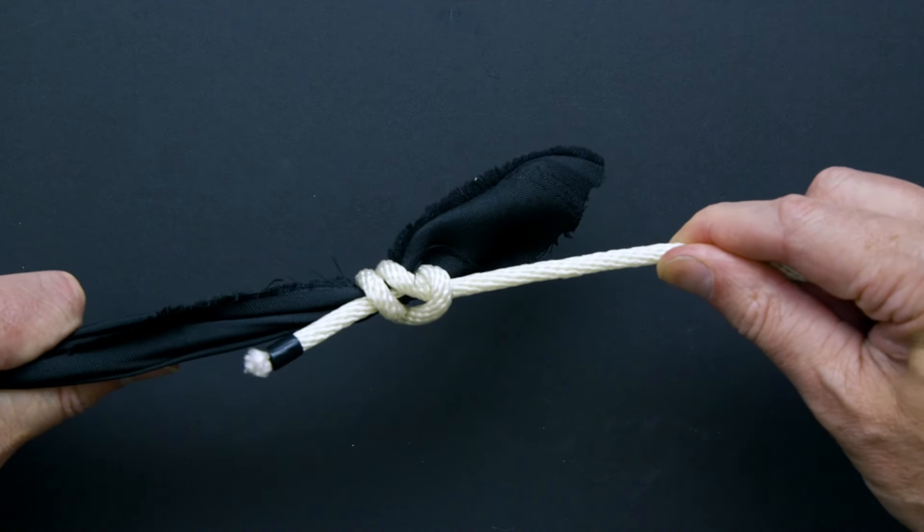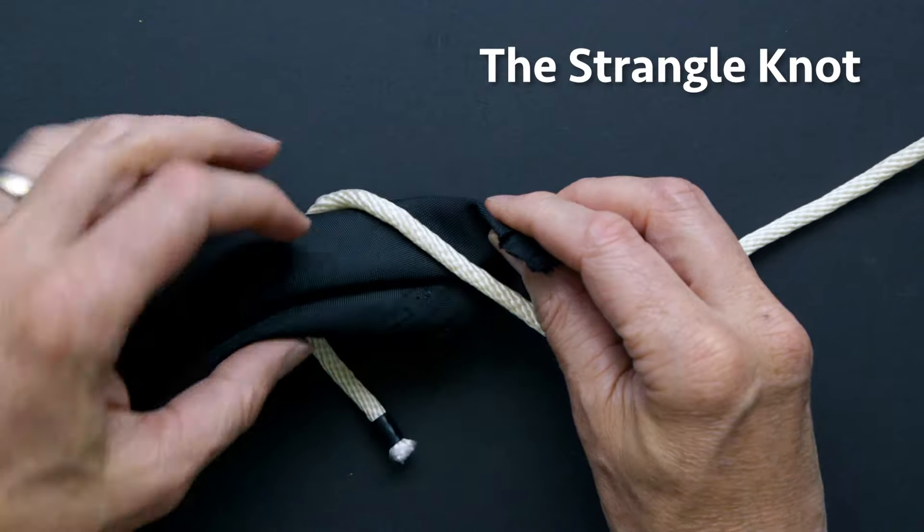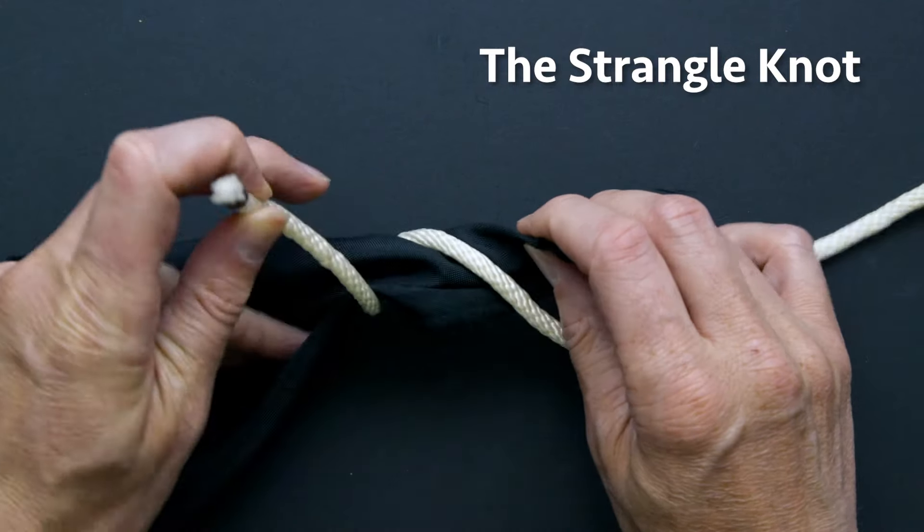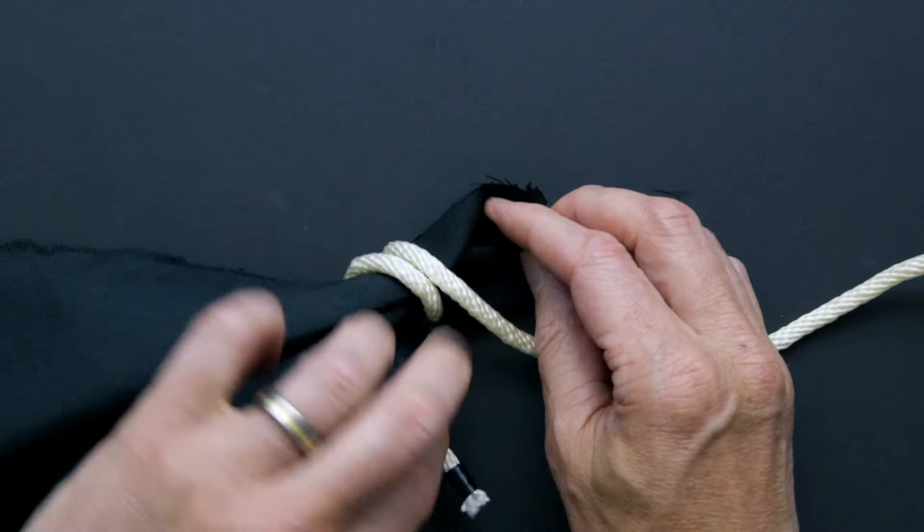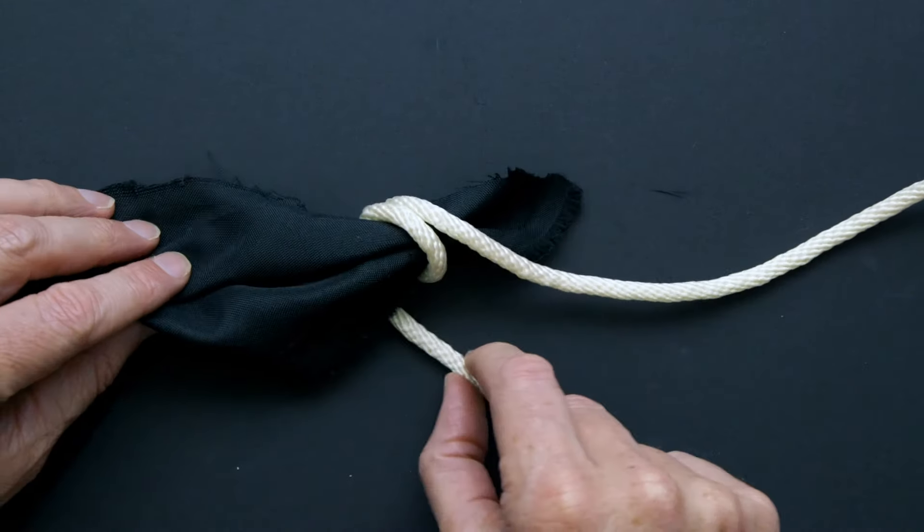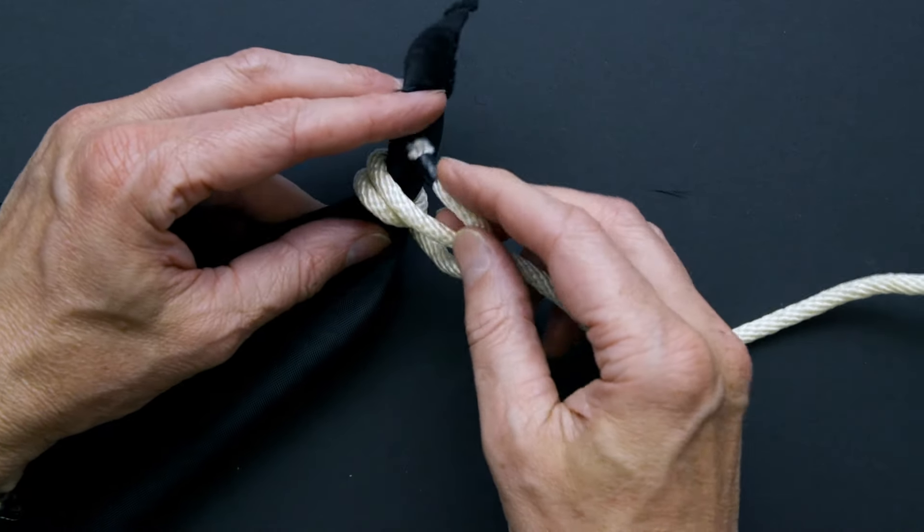Sometimes you need to tie off the corner of a piece of fabric or plastic that doesn't have a grommet in it. Here's a simple knot to do that: the strangle knot. It was used to tie off sacks and bags in the olden days. It looks like a messed up clove hitch because when you bring the line around you bring it up on the same side then go over and under.